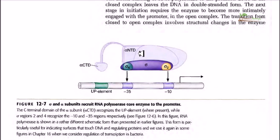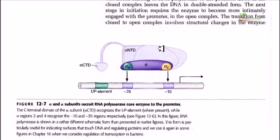Alpha CTD is a very important part used to attach to and recognize the UP element sequences in the DNA. On the other hand, alpha NTD is the structural unit that holds on to the beta subunit of this polymerase. The beta subunit portion carries the catalytic activity domain and has a cleft through which it can vigorously add nucleotide sequences to the growing RNA chain.